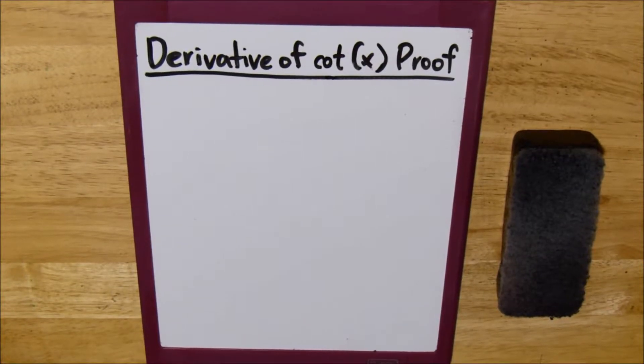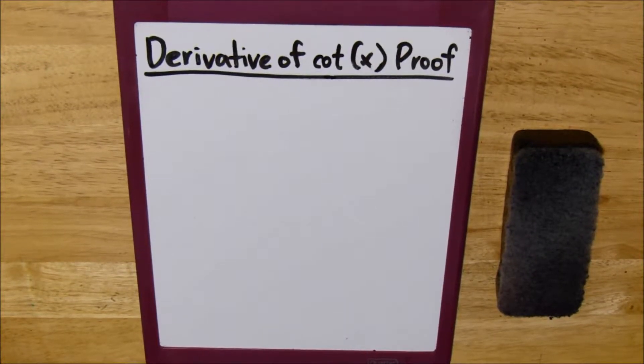Today we're going to be talking about the derivative of cotangent of x. All you need to know are some sine and cosine properties and how to use the quotient rule.